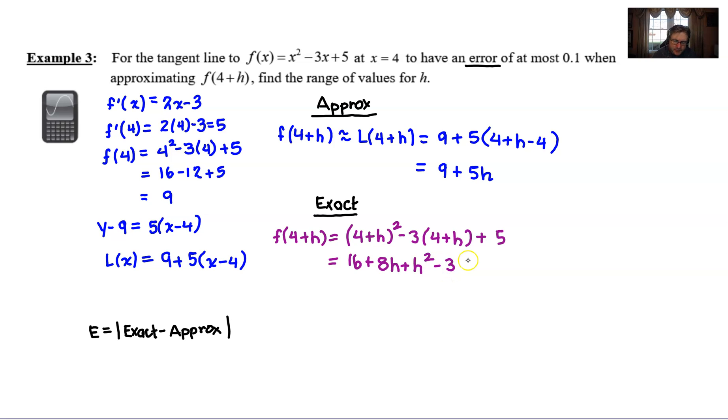Next, we will distribute our 3. 3 times 4 is 12. 3 times h is 3h, but the negative goes along as well. And we follow up with our plus 5. When we combine like terms, we end up with h² + 5h, and then 16 - 12 is 4 plus 5 is 9. And that's going to be our exact value.